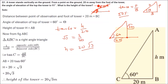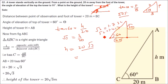Sometimes in the question they may ask you to answer up to two decimals. Most of the time root 3 and root 2 will count. For root 3 you can take 1.732 and for root 2 you can take 1.414. So here you can take root 3 as 1.732 and just multiply. But the exact form 20 root 3 is also acceptable.